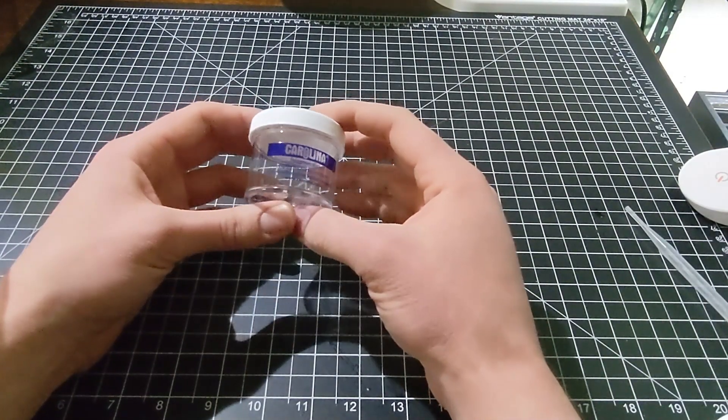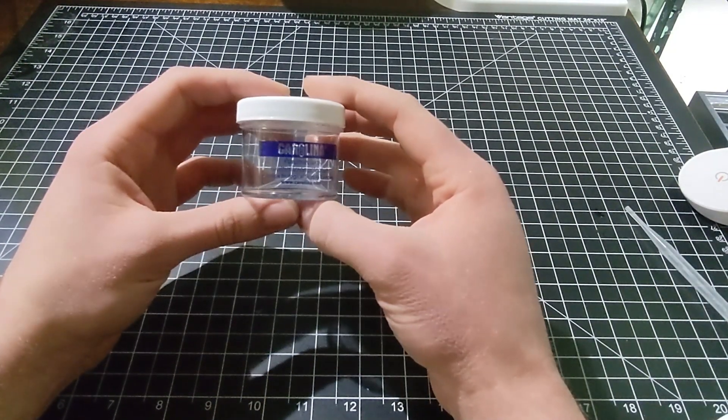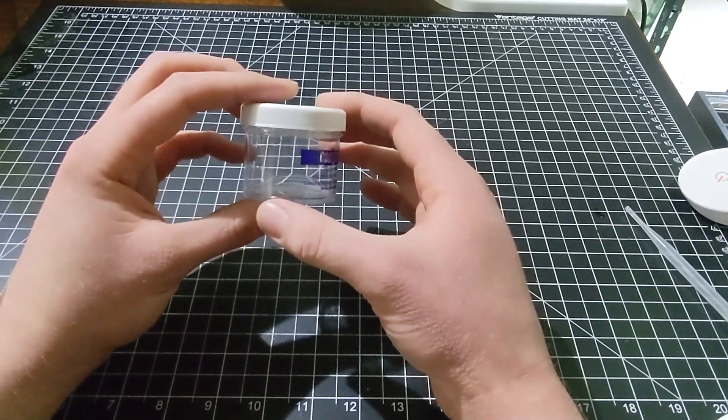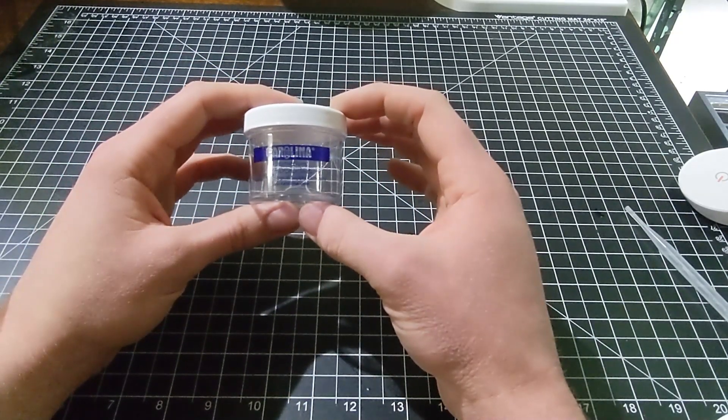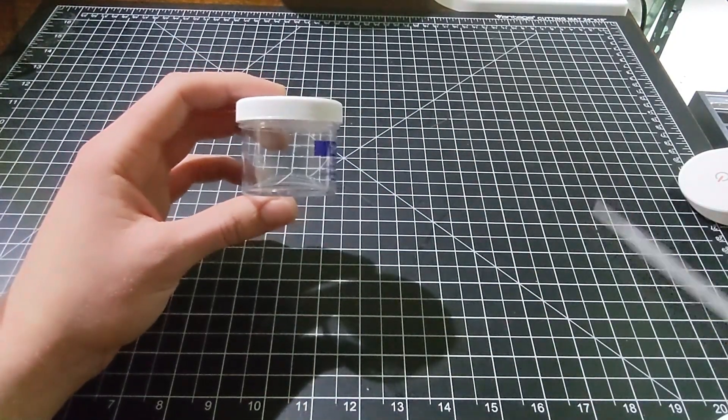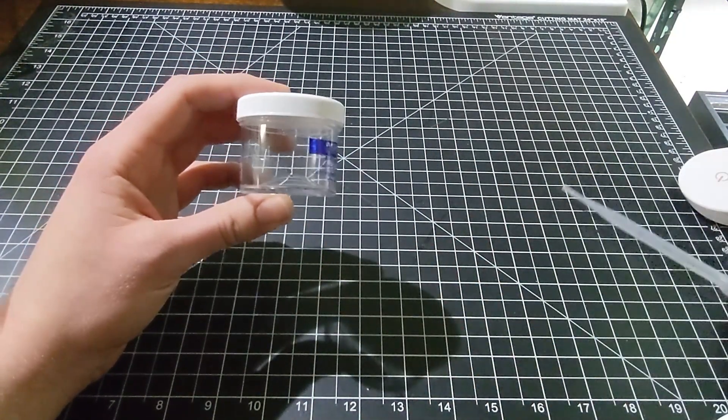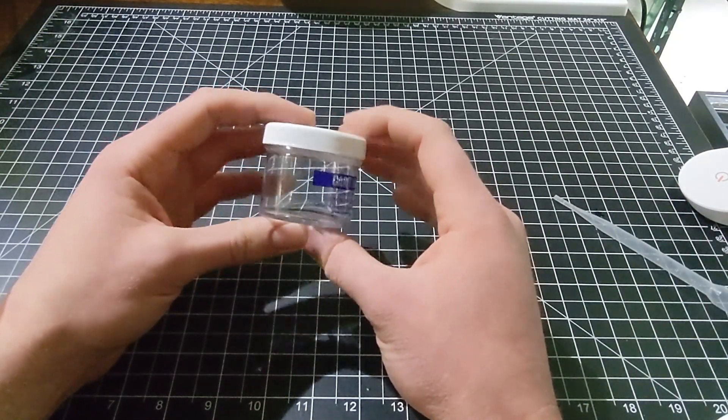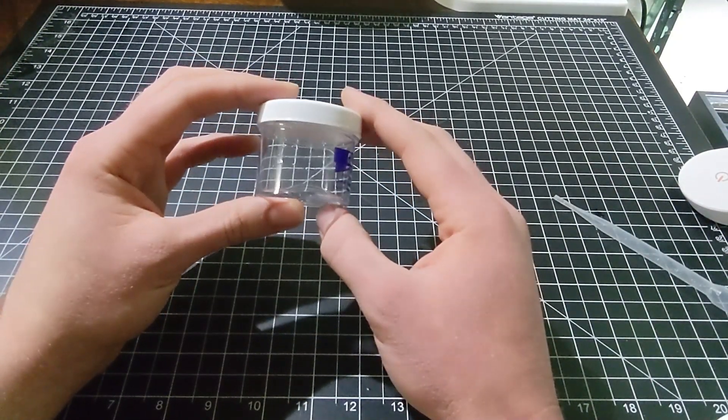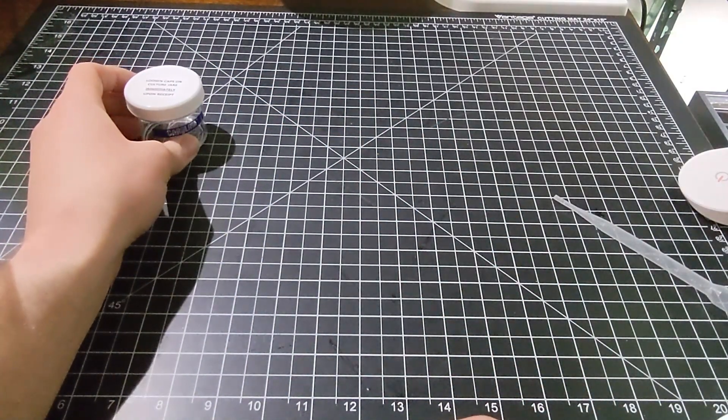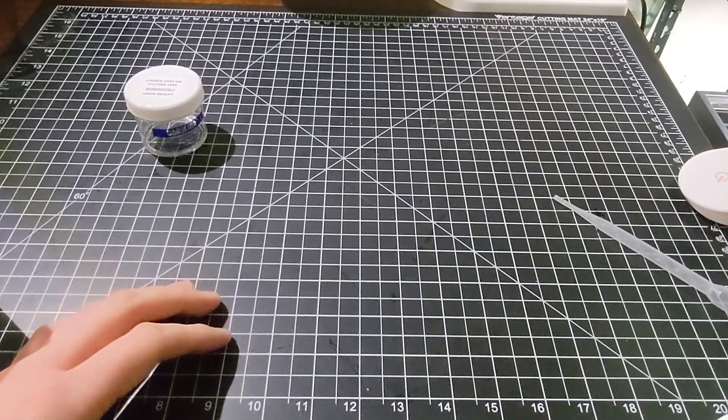Okay, first thing you need to do is find yourself a paramecium culture. This came from Carolina Biological Supply and after shipping it cost me about $20. It arrived in a little box with instructions and a free pipette. If I had to guess, there were probably somewhere between 50 and 75 individual organisms swimming around in here. Get that ordered and on the way, and while it's coming you can prepare the rest of your culture.